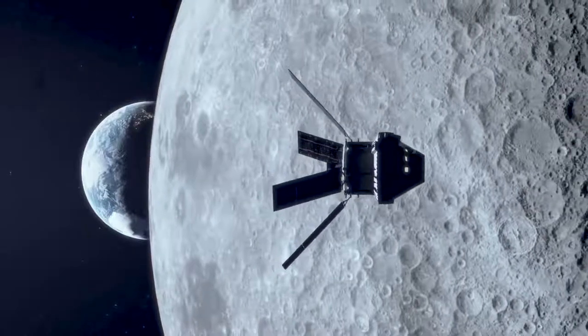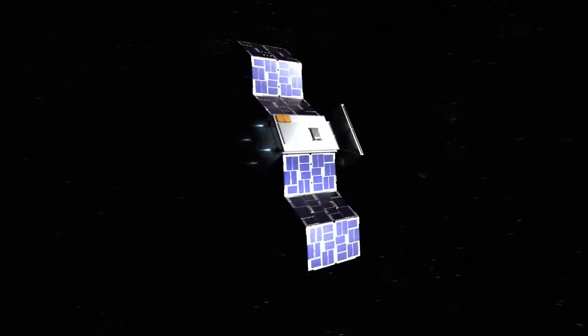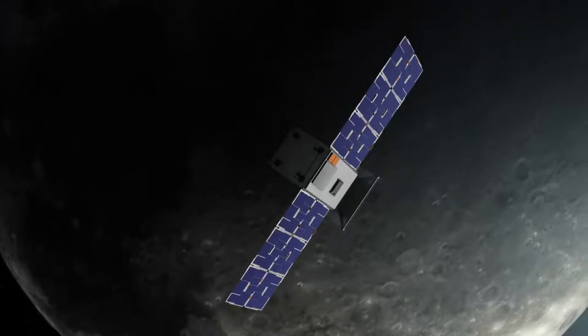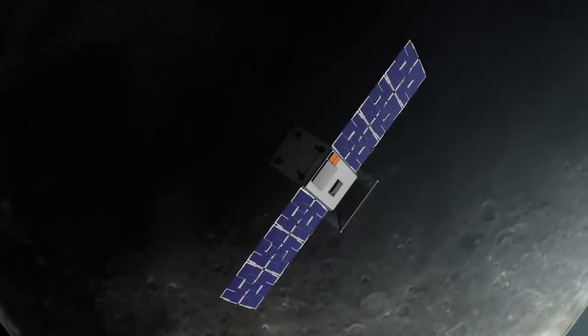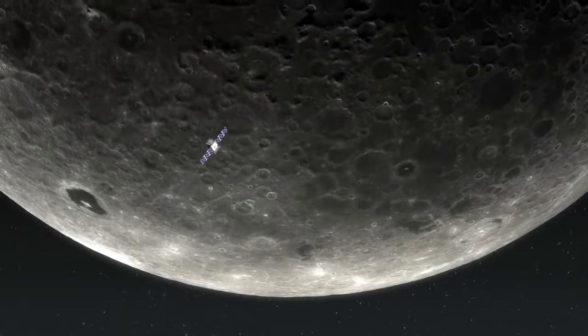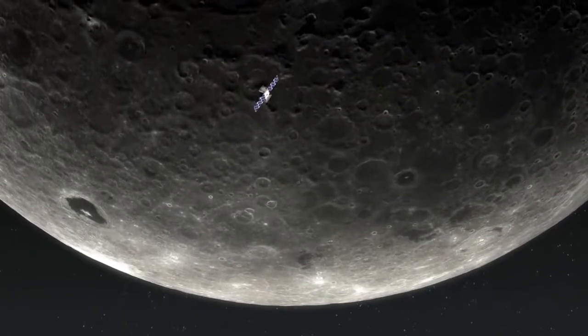Before NASA's Artemis astronauts go to the Moon, a small spacecraft called Capstone will help lead the way. The Cislunar Autonomous Positioning System Technology Operations and Navigation Experiment will test a unique lunar orbit that has never been flown before.